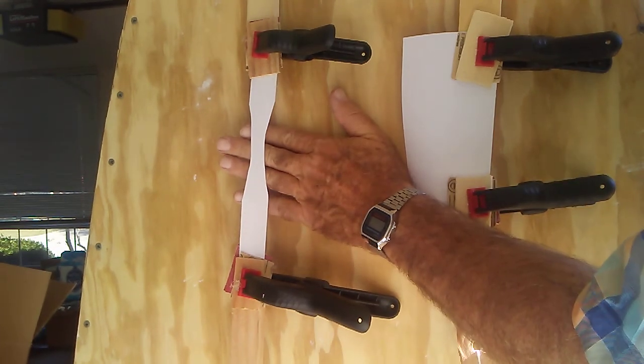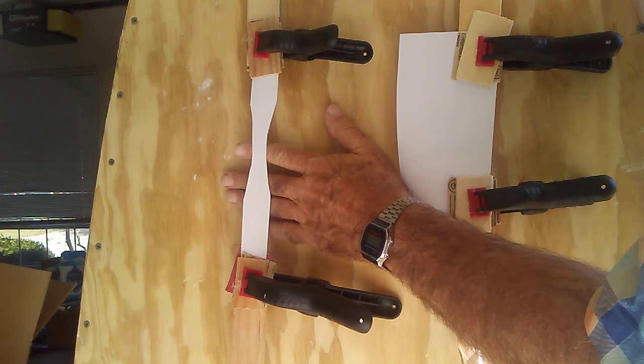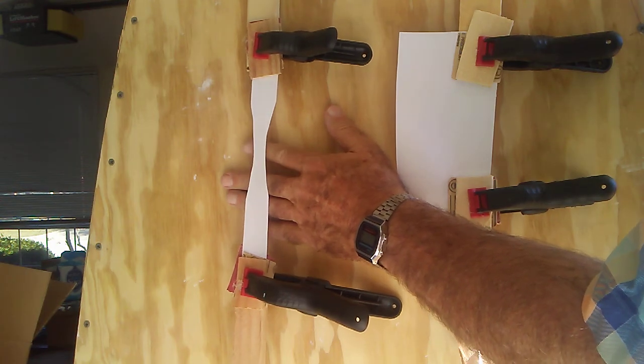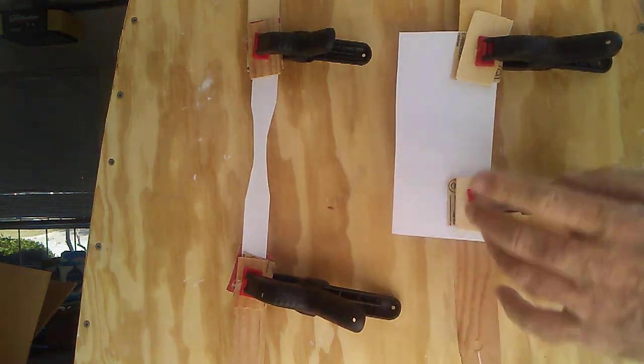On this side we have a very narrow strip here that's only half inch wide at its narrowest point. This appears to be much stronger.